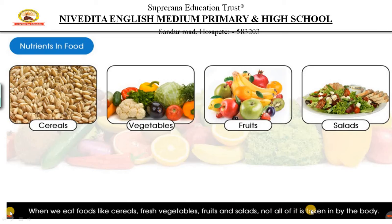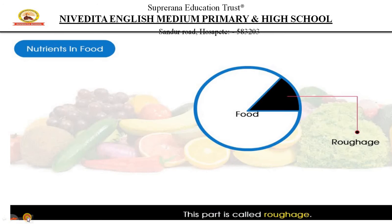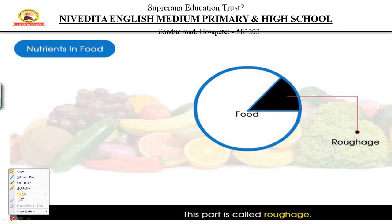When we eat foods like cereals, fresh vegetables, fruits and salads, not all of it is taken into the body. The complete food that we eat doesn't contain only carbohydrates, fats, minerals, proteins and vitamins. It also contains other things called roughages, as you can see here.